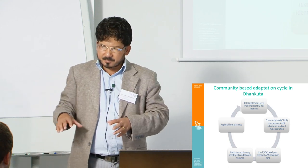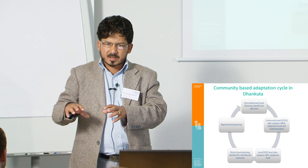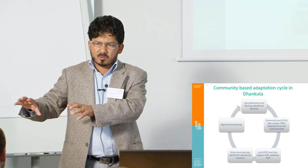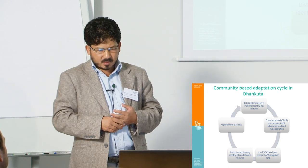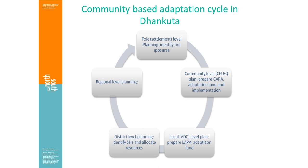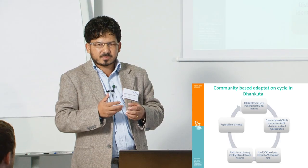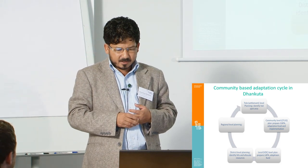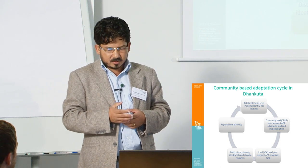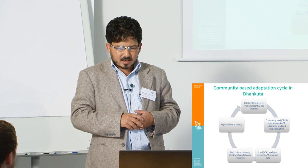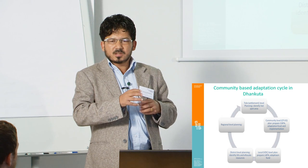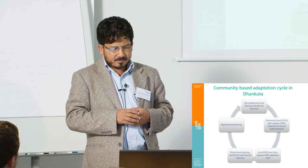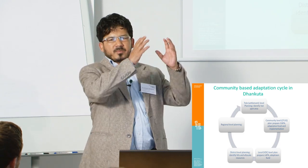Community-based adaptation planning starts from the ward level through a bottom-up planning process. At the settlement level, they hold mass assemblies to identify hotspot areas and vulnerable people, then prepare a community-level plan and mobilize adaptation funds. They also prepare local-level adaptation plans for action and manage adaptation funds. At the district level, they identify stakeholders who can support their plan and allocate resources. From regional level planning, it goes up to the national level plan.